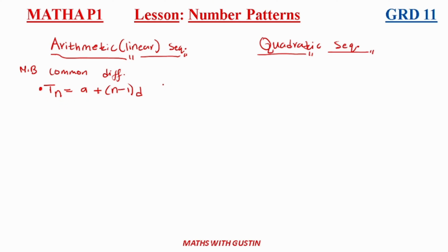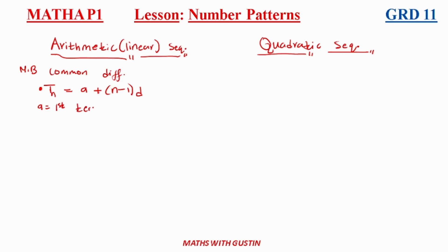The most important thing you need to know is the general formula: Tn = a + (n − 1)d. Here, 'a' refers to the first term of the pattern.